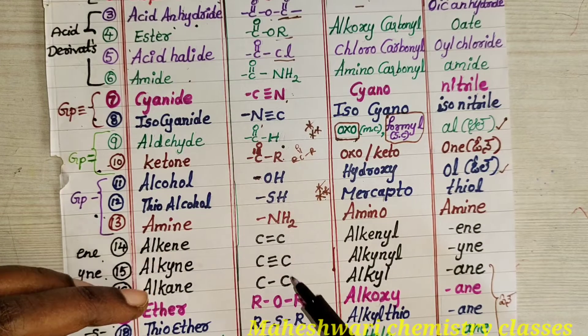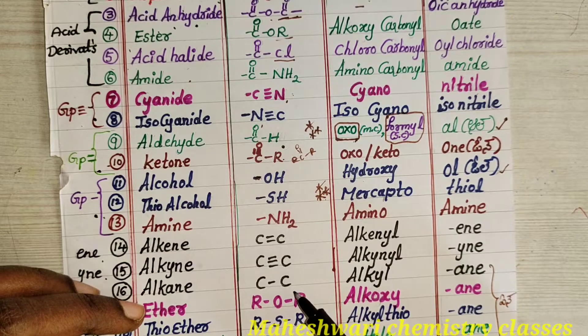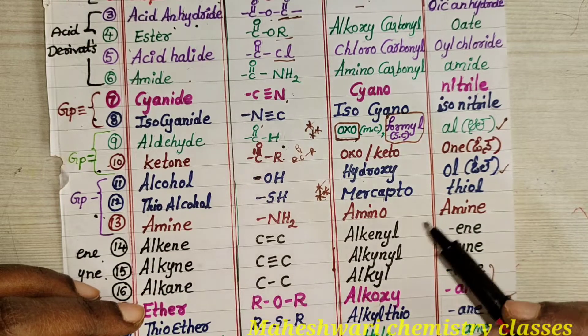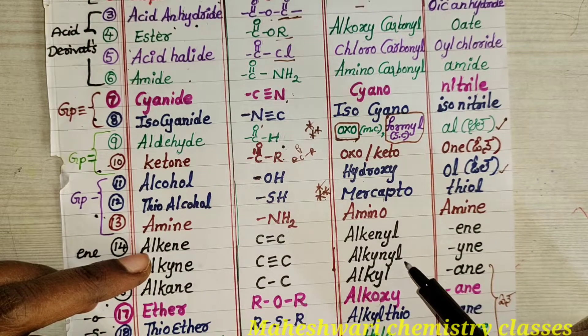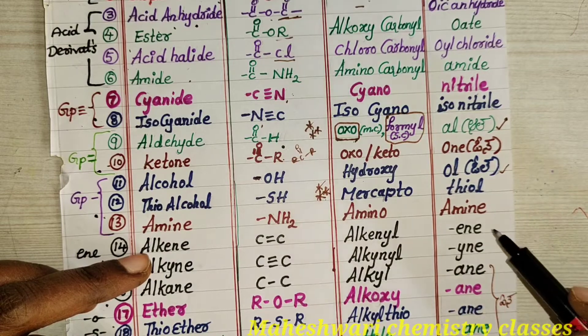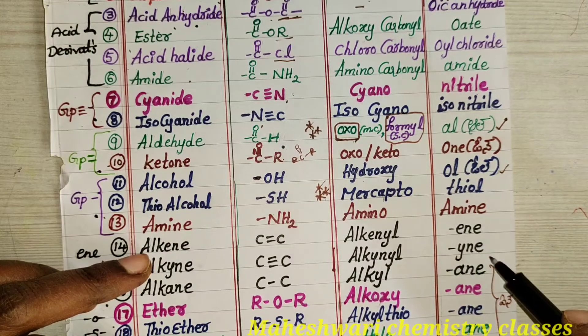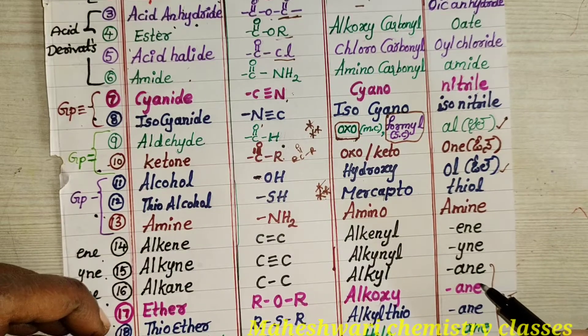Next: alkene, alkyne, alkane. Prefixes are alkenyl, alkynyl, alkyl. Suffixes are ene, yne, ane.